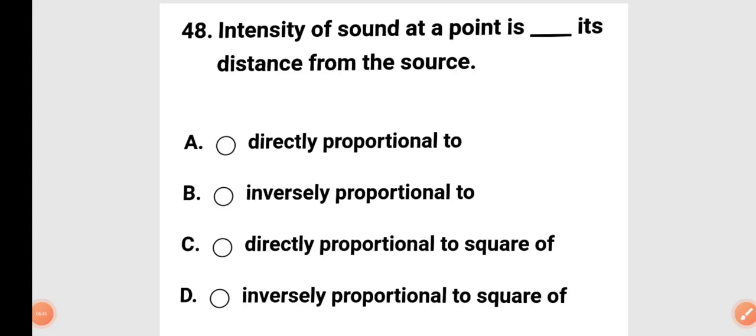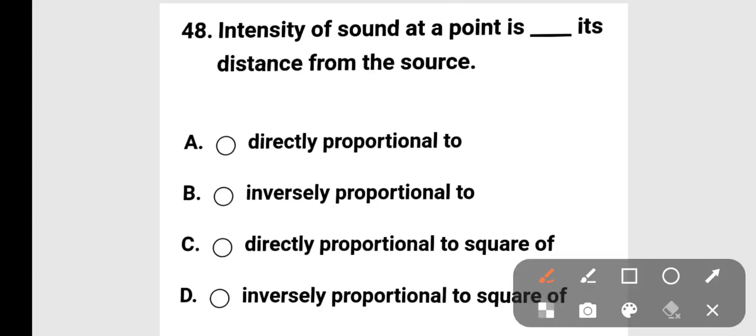Next question: the intensity of sound at a point is — what — its distance from the source? Options include directly proportional, inversely proportional, inversely proportional to the square. The correct answer is option D: intensity of sound is inversely proportional to the square of its distance from the source.